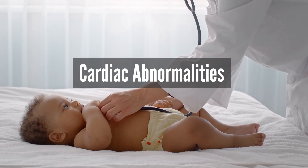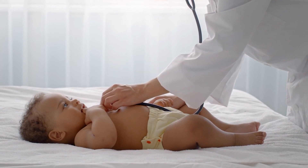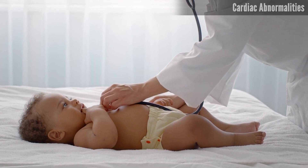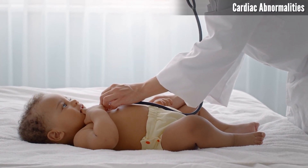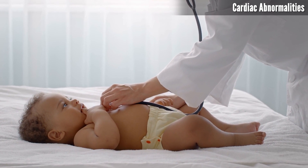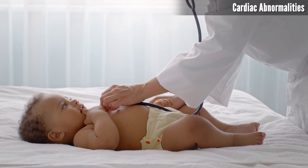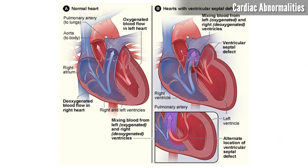Cardiac Abnormalities. Heart defects are prevalent in individuals with Trisomy 18 and are a leading cause of morbidity and mortality. These abnormalities can range from structural defects, such as ventricular septal defects and atrial septal defects, to more complex cardiac anomalies requiring surgical intervention.